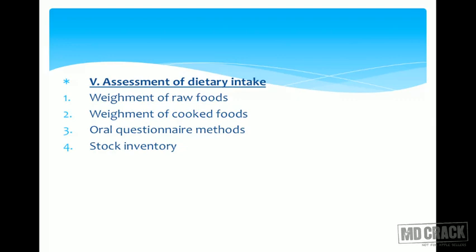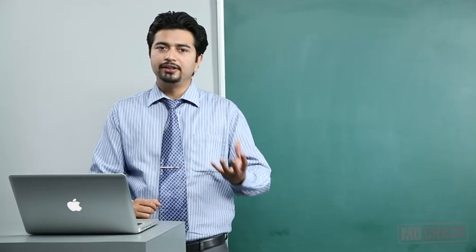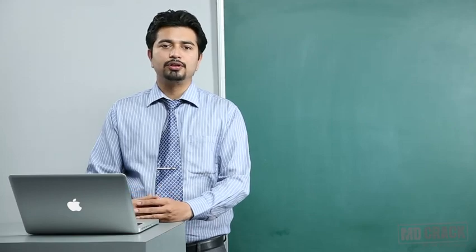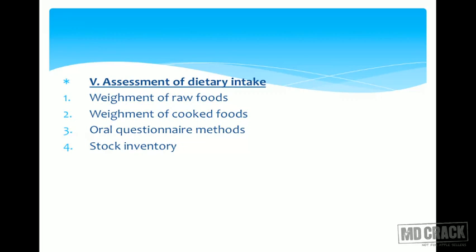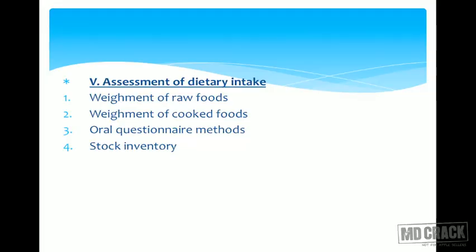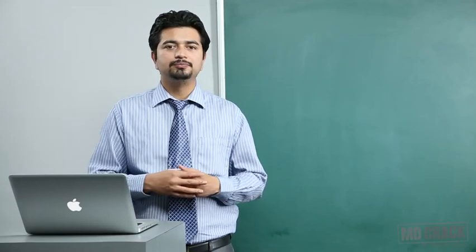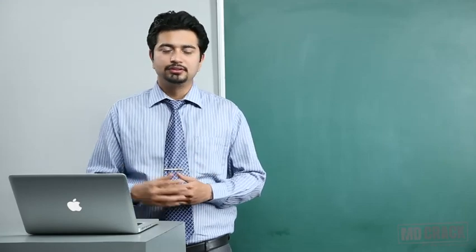Assessment of dietary intake is another approach for nutritional monitoring. You can use weighment of raw foods — each day before the meal is cooked, whatever is being prepared is weighed. The second method is weighment of cooked food, though people may resist allowing you to weigh cooked food. The oral questionnaire method gives people a questionnaire to write down whatever they ate on a particular day. Stock inventory takes stock of available food in the house on a monthly, fortnightly, or quarterly basis.